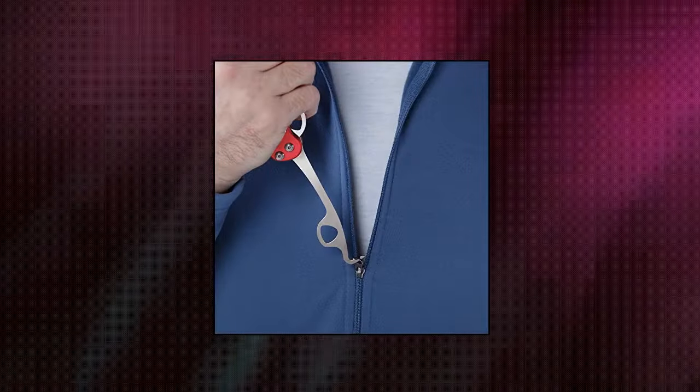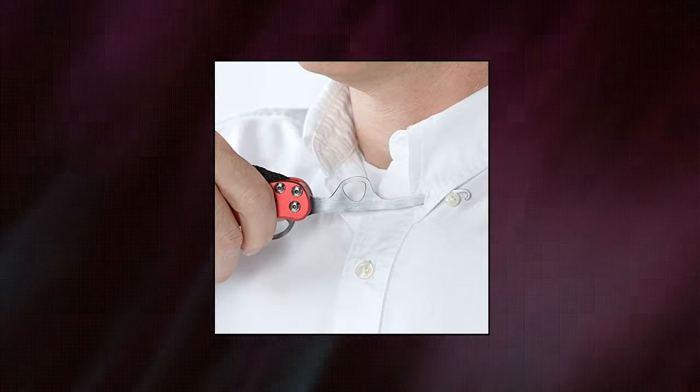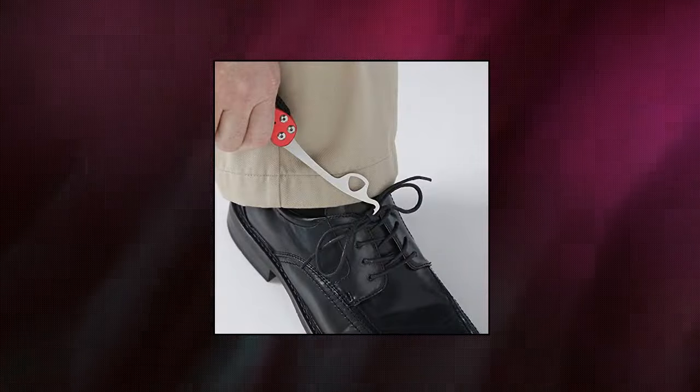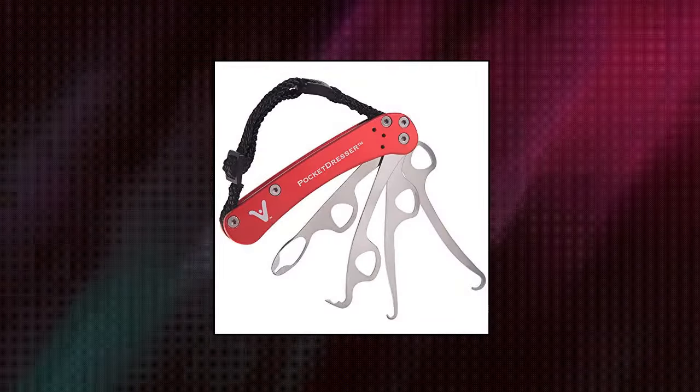Veve zipper pull and button hook pocket dresser and dressing aid for assistance with button hooks, all-in-one dressing tool. Four dress assist tools make getting dressed easier. Pocket assistant features a quick-release hand strap and pocket clip that folds away neatly when not in use.